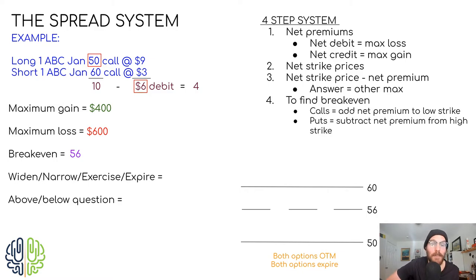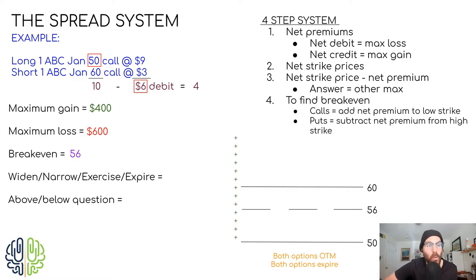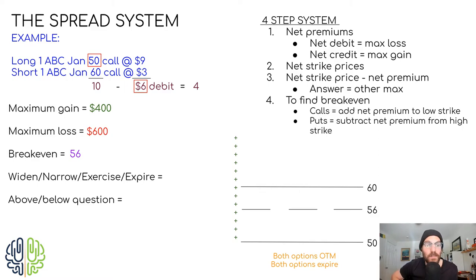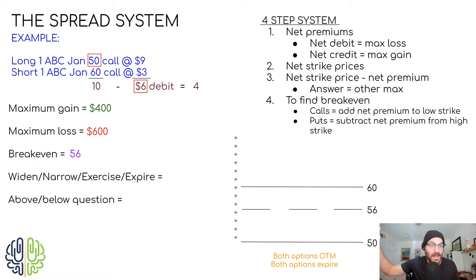Once the market goes above 50, the long call goes in the money, meaning it starts gaining intrinsic value as the market goes up and making money for the investor. Just like any other long call, it will make money all the way into infinity. It's no mistake that once we get to 56, the long call is $6 in the money — it's made $600. If the investor exercised their long call and bought stock at 50 and sold it at 56, they'd make $600, which pays for the original net debit, getting them back to break-even. Above 56, we're in gain territory.